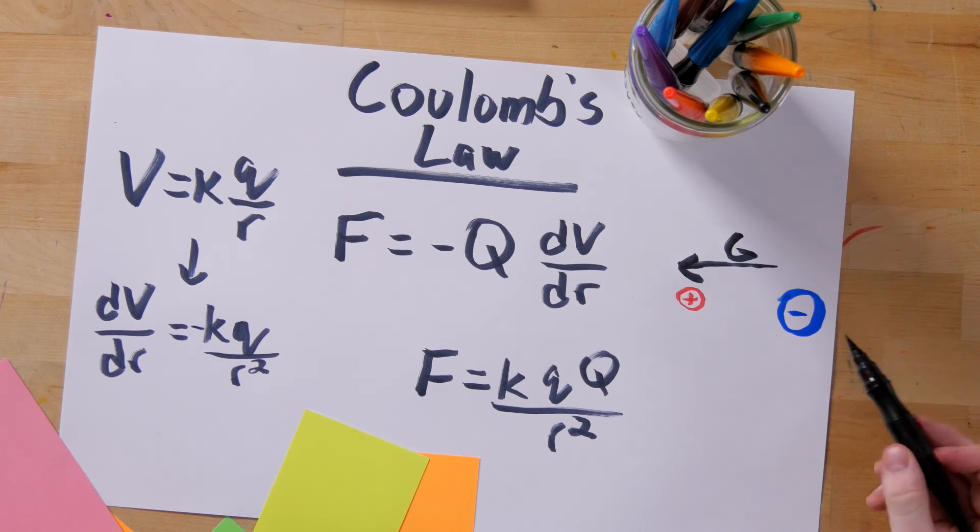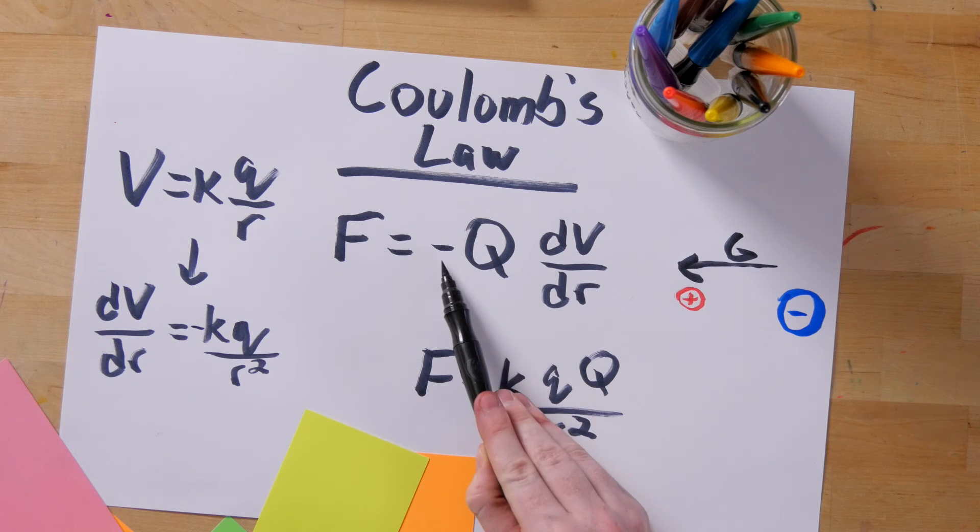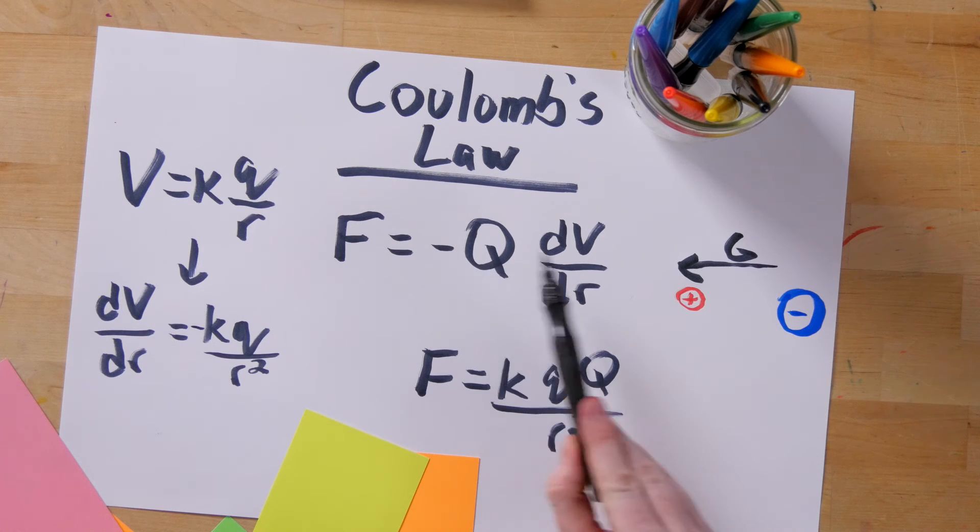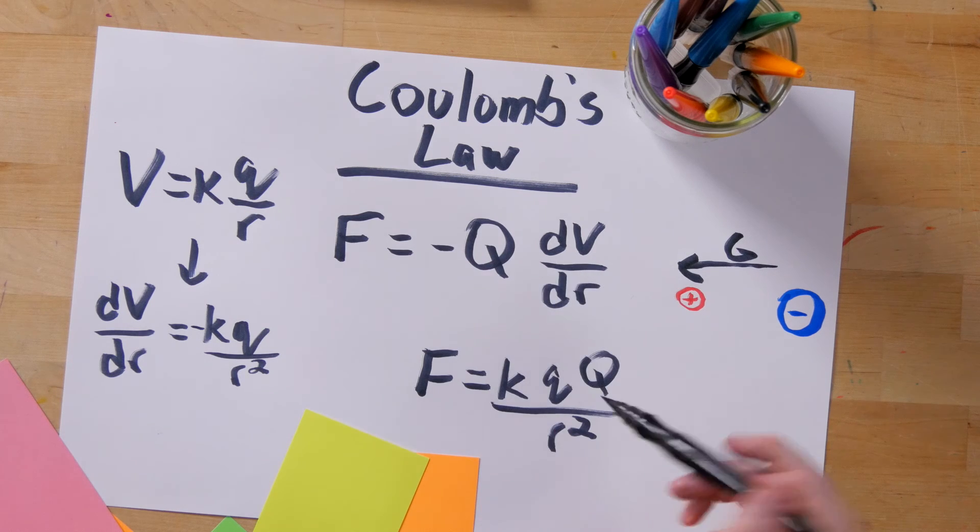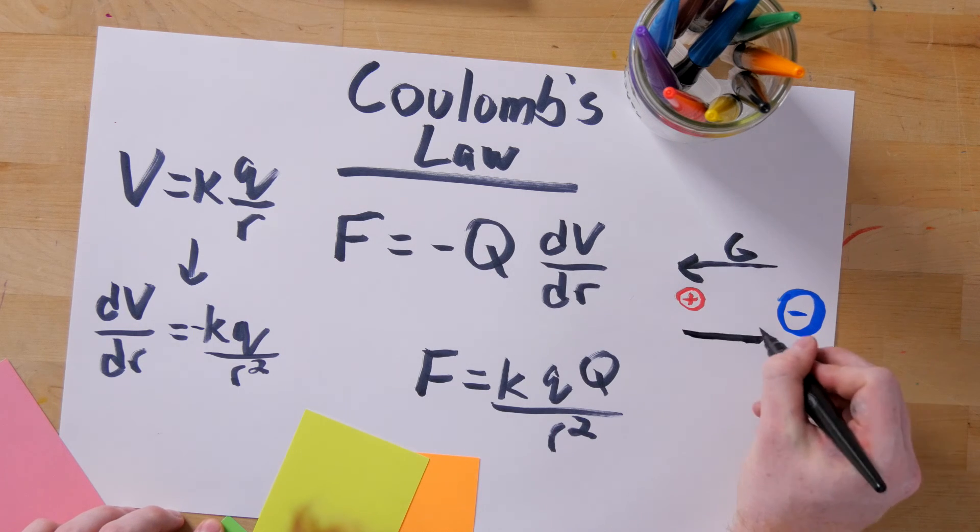Now let's plug this info into our original equation. We have a negative sign, a positive Q, and a gradient to the left. So with the negative on the left, we end up with a force that points to the right.